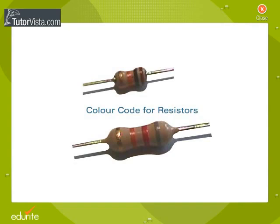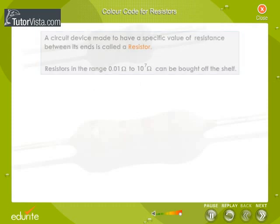Color Code for Resistors. A circuit device made to have a specific value of resistance between its ends is called a resistor.